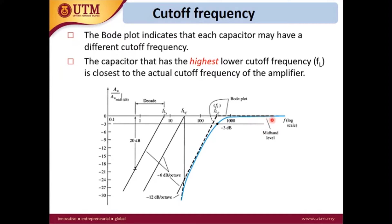In the Bode plot, above the highest calculated cutoff frequency is the mid-band. In the mid-band, the gain is at a fixed value. Once the frequency reaches the highest calculated cutoff value, we consider that the actual low cutoff frequency, and the gain will decrease.